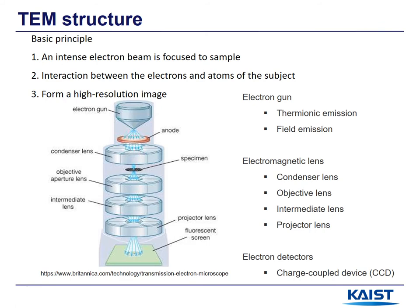The basic principle of TEM is that an intense electron beam is focused onto the sample, and the interaction between the electrons and atoms of the subject forms a detailed, high-resolution image. This figure shows the overall view of the inside of the TEM. The electron beam comes out from the electron gun and is focused onto the specimen by the condenser lens. The electron beam which penetrates the specimen is then focused and magnified by the objective lens, intermediate lens, and projector lens. Finally, the electron beam is converted to an image through the electron detectors.